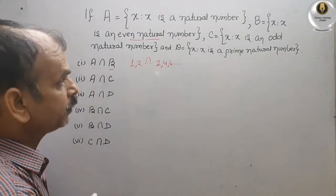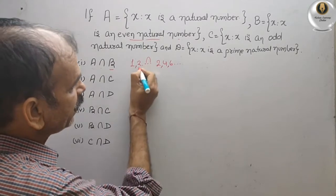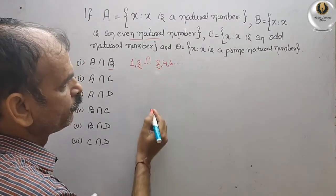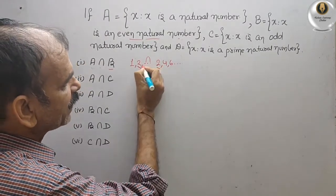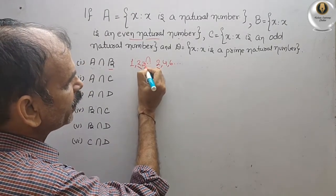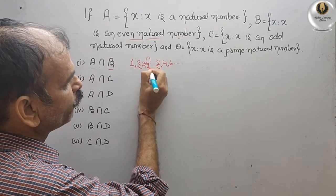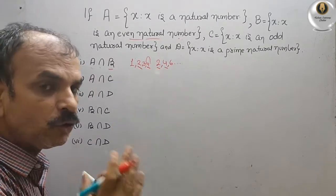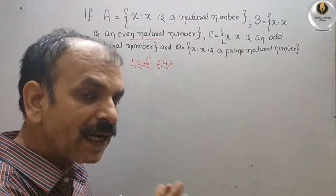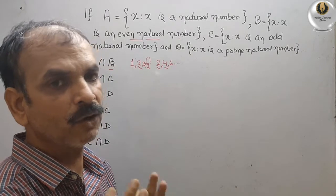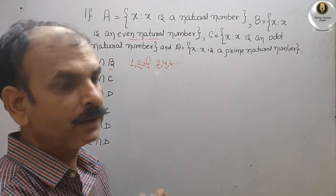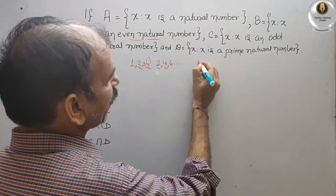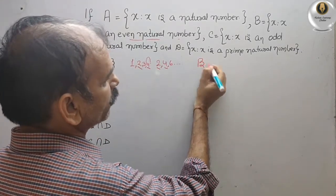You can see 2 is in both sets. After that 4 and 4, and so on. That means you will get even natural numbers only. Therefore, the answer here is B only.